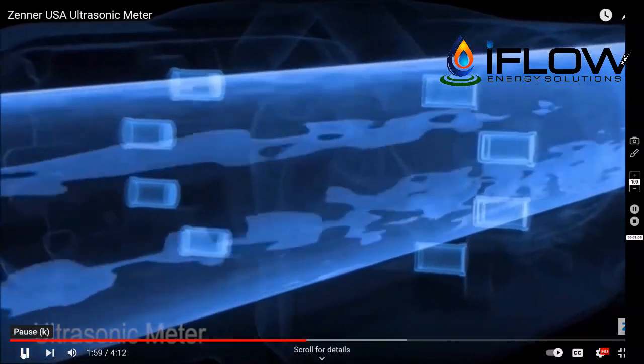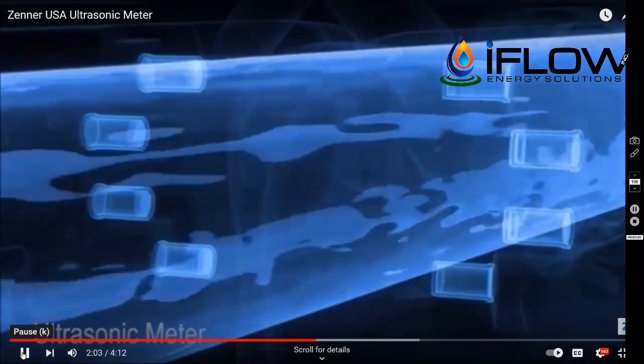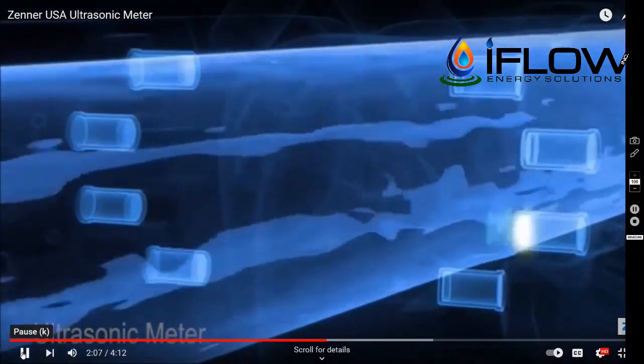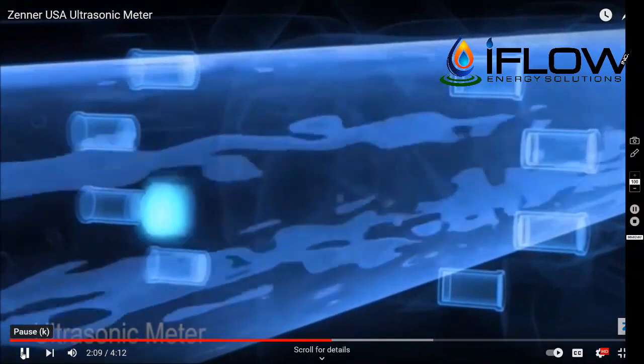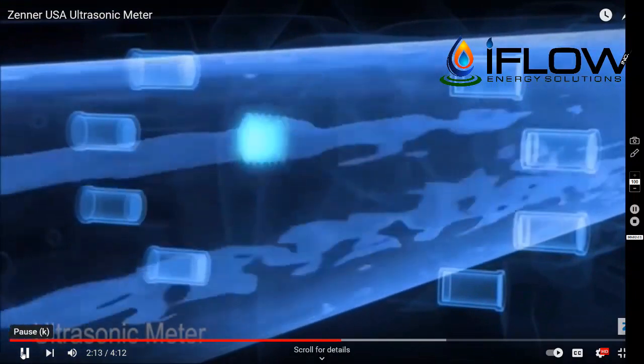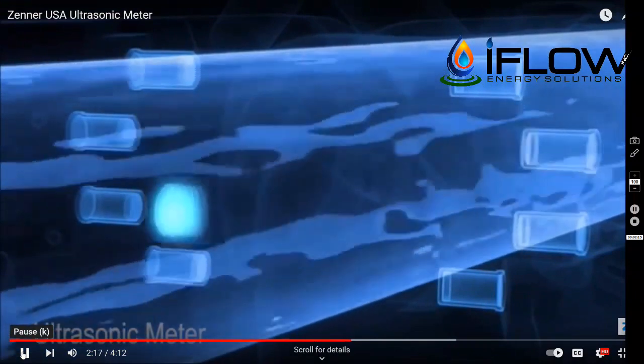Once the fluid starts to flow in the measuring tube, the ultrasonic signals are accelerated in the direction of the flow and decelerated against the flow. As a result, the ultrasonic signals now have different transit times, less time in the direction of flow and more time against the flow.